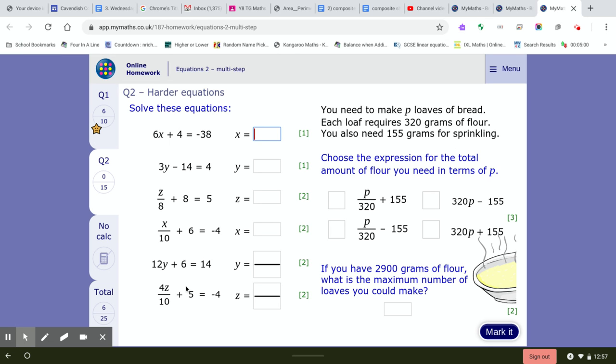We'll look at this one. Okay so x divided by 10 plus 6 is equal to minus 4. So you're doing the inverse to add 6, that would be take away 6. So x divided by 10 is equal to negative 10. Something divided by 10 gives you negative 10, so that must be negative 100.